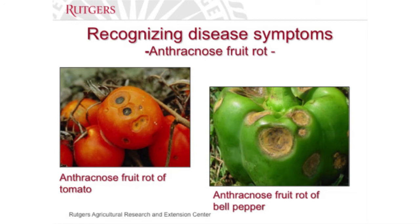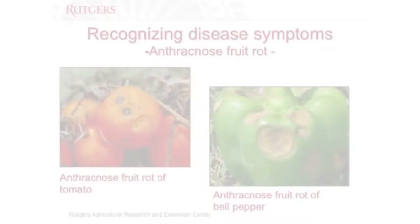What's interesting about tomato anthracnose is that these infections took place weeks ago when the fruit was still green. The spores land on the green fruit, infect it, and just sit there latently — they don't produce any symptoms until the fruit starts to change color or ripen. So if you had 100 acres of processing tomatoes like this, there's nothing you could do to save your crop. Once anthracnose is in your garden, it's going to be there practically forever.